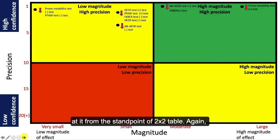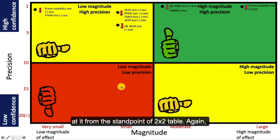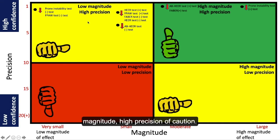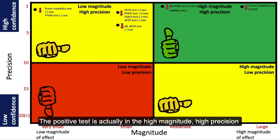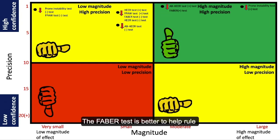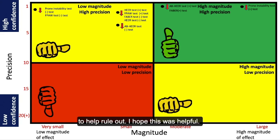Looking at the 2x2 table and trying to avoid the quadrant of doom: the negative test, in one lower-quality study, falls in the low-magnitude, high-precision quadrant of caution. The positive test is in the high-magnitude, high-precision quadrant, but again from one lower-quality study. So the FABER test is better at helping to rule in hip instability and micro-instability than it is to rule out. I hope this was helpful — take care.